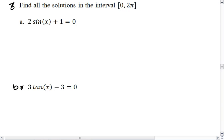Question 8: I want you to find all the solutions in the interval 0 to 2π for the following equations. We have 2sin(x) + 1 = 0 for A, and 3tan(x) - 3 = 0 for B.